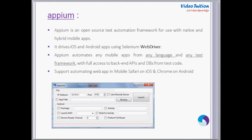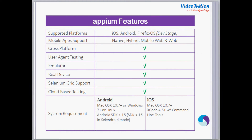Appium drives Apple's UIAutomation library for iOS support, and for Android support uses the UI Automator framework for newer platforms and Selendroid for older Android platforms. In this slide, I will talk about Appium features. Appium provides great testing solutions for Android and iOS mobile applications, along with some support for Firefox OS, which is currently in a budding state.